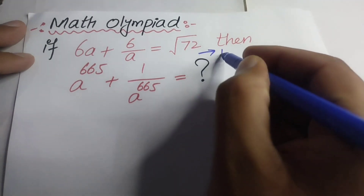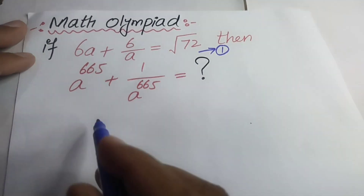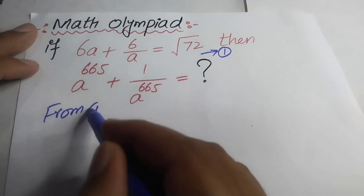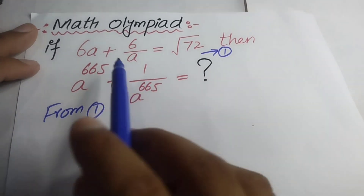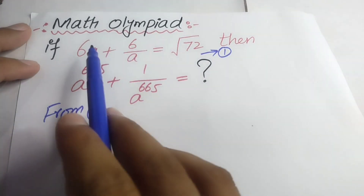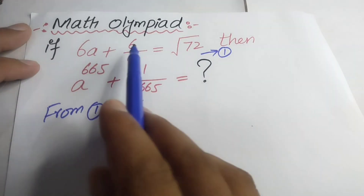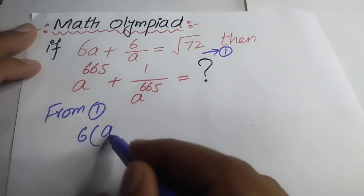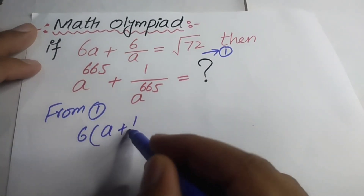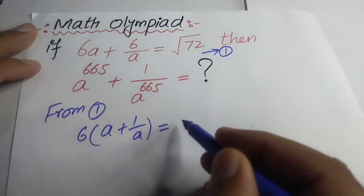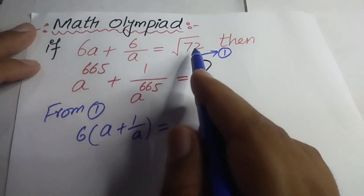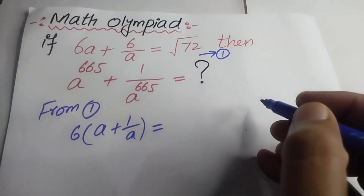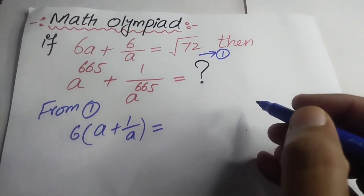First, I can take this as query number one, and we can use query number one. We just factor 6 from these two expressions, and I will obtain a + 1/a is equal to...